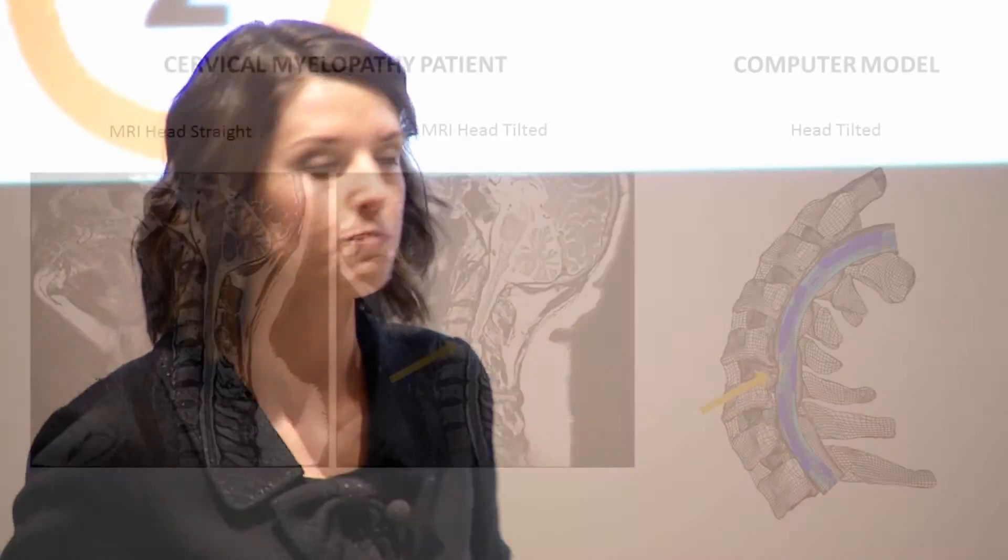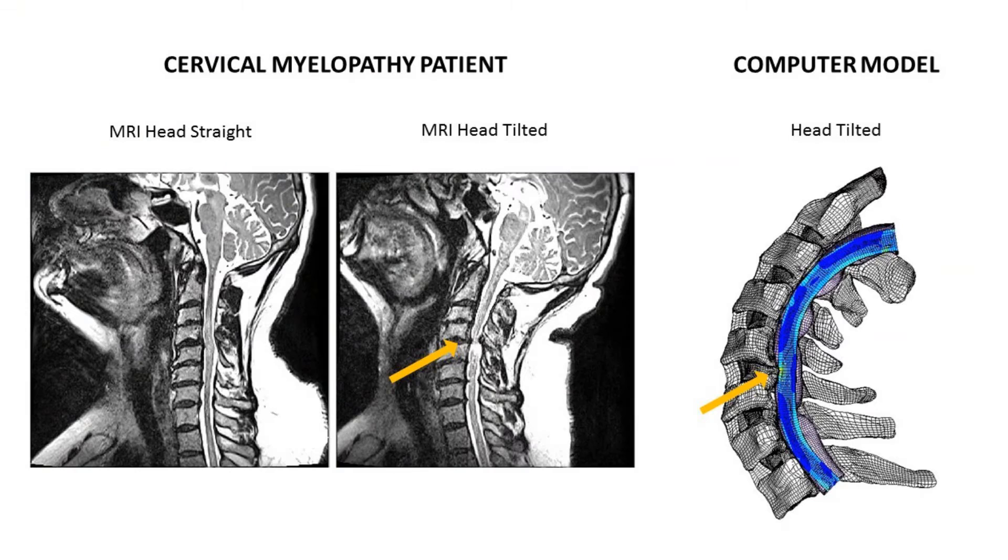But what if we could know before the surgery how each of these techniques affects spinal cord compression? That's exactly what I'm studying. I'm creating computer models of cervical myelopathy that mimic how the spinal cord is compressed during daily motion. On the computer model, as the head is tilted backwards, it replicates the compression of the spinal cord. I can then incorporate surgeries into this model to see which surgical technique is best at decompressing the spinal cord.